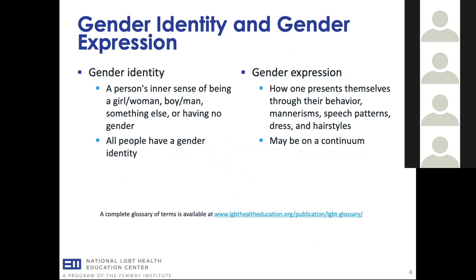What is gender identity? It's a person's inner sense of being a girl, woman, boy, man, something else in terms of gender, or having no gender at all. In most countries and cultures, babies are born and assigned one of two sexes based on external anatomy — female or male, and in some cases intersex. We now know these babies grow up to become children, adolescents, and adults who may have a gender identity that doesn't align in a conventional way with the sex they were assigned at birth. We also appreciate that many people have non-binary gender identities.